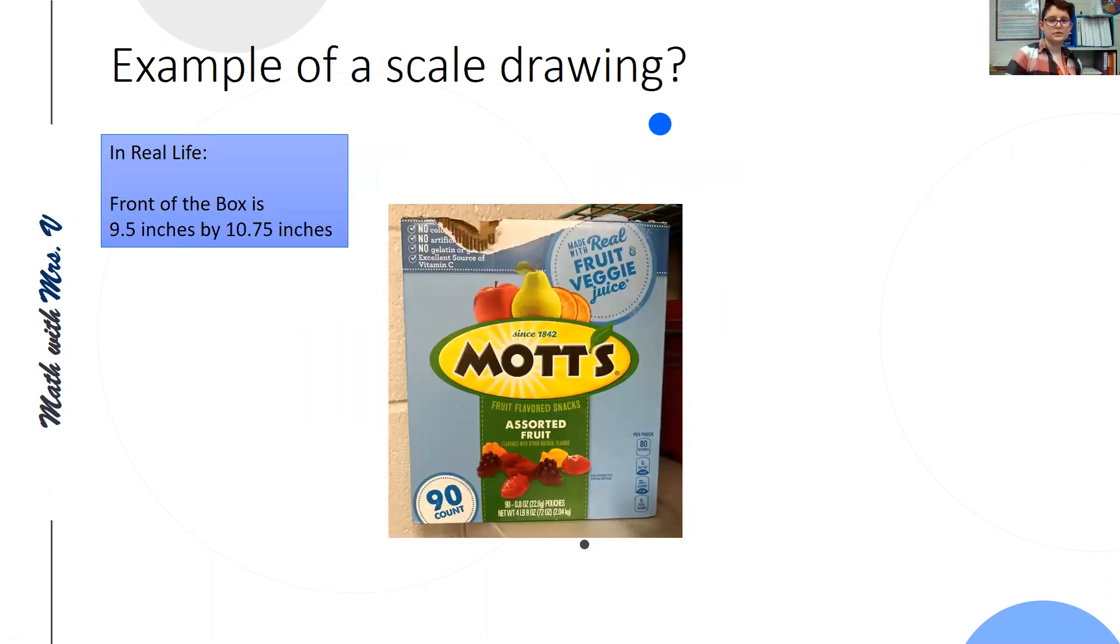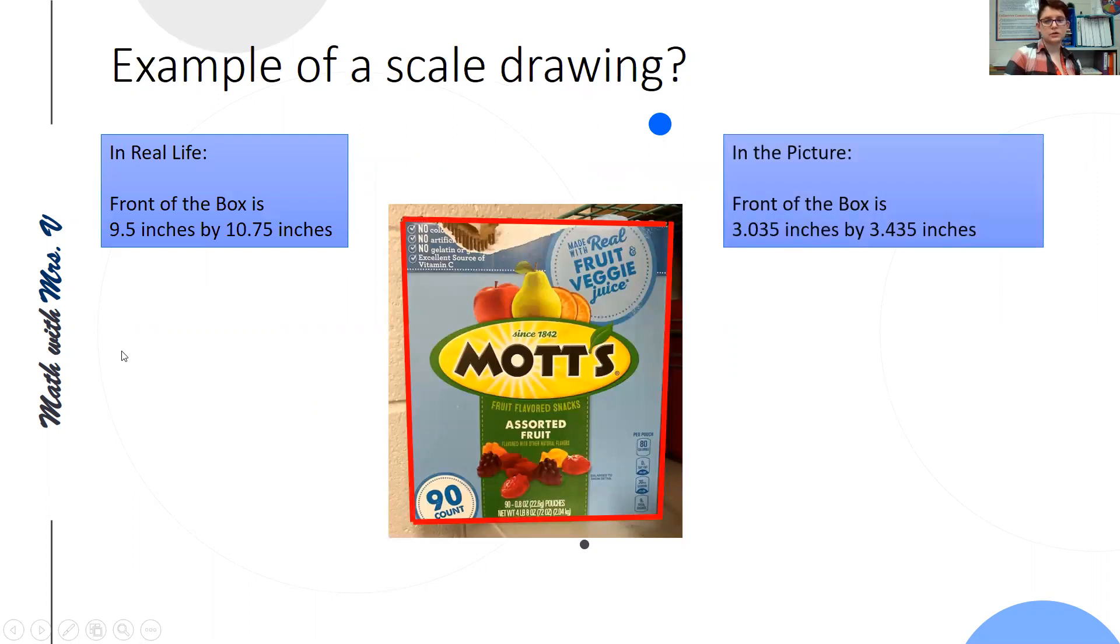For example, this is a box of fruit snacks that I have and in real life if you measure the front of the box it measures 9.5 inches by 10.75 inches. But the picture is not that size. If we measure the picture we can find that the front of the box is 3.05 inches by 3.435 inches. And so we would say our scale or what we multiply or divide by depending on if we're going to a larger size or smaller size is 3.13.